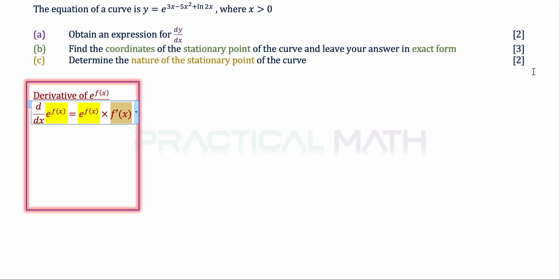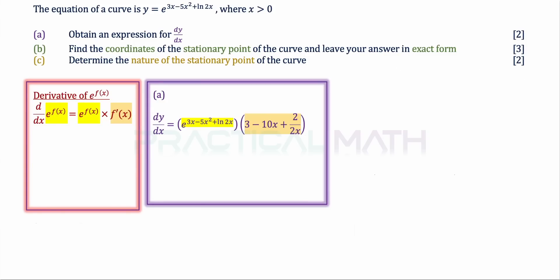With this in mind, we can start part A. Our dy/dx will copy down e to the power of f(x) — the original — multiplied by the differentiation result of the power. Differentiating each individual term: differentiating 3x gives 3, differentiating negative 5x squared brings down the power and subtracts 1, giving negative 10x.